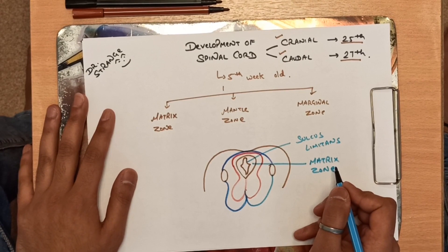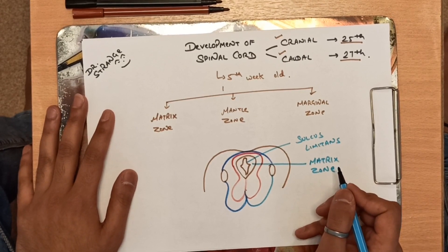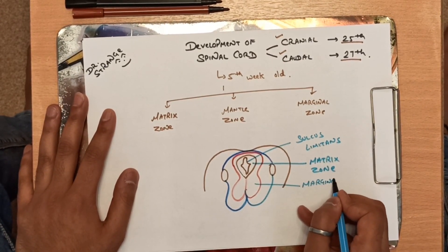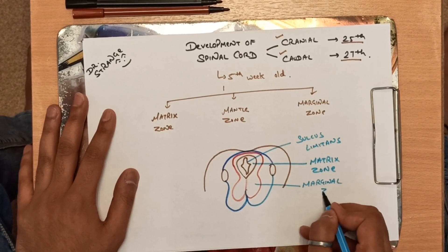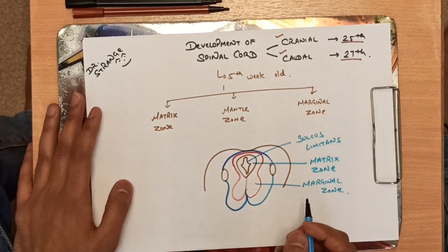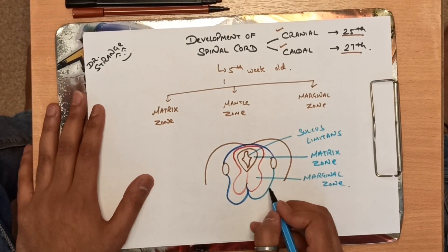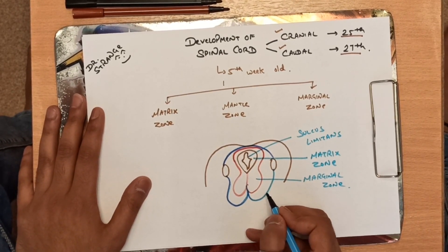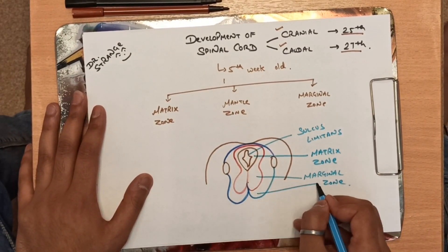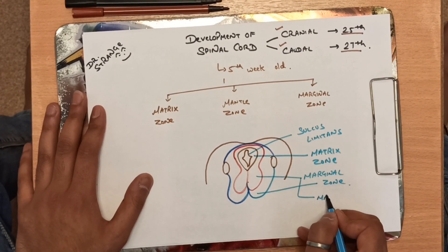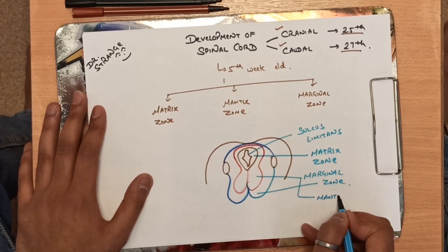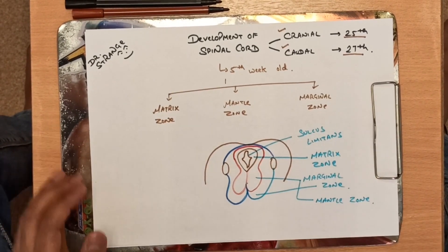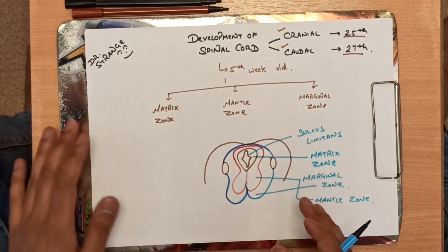Outside the matrix zone there is the marginal zone, which is the outermost part. This is the marginal zone and this is the mantle zone.